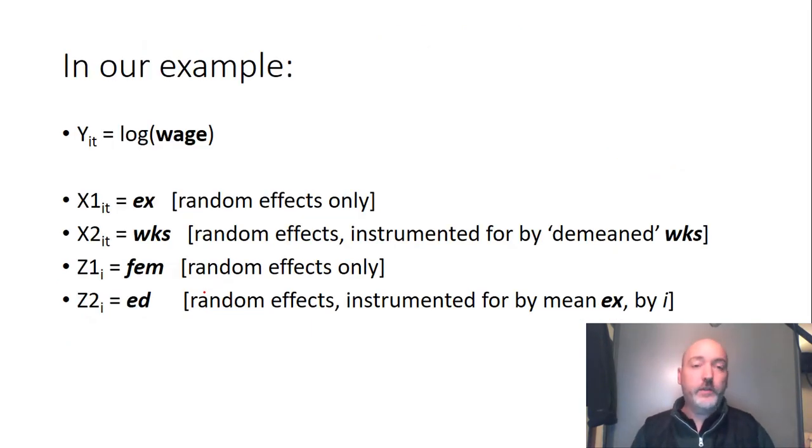So we might suspect, with our log wage as our dependent variable, the X variables are the work experience and weeks worked. Then we just have to think about which one is potentially correlated with the AI. We might assume that the level of experience is going to be uncorrelated with the time invariant error component. But we could definitely imagine a case where the number of weeks worked is going to be individual specific and have a correlation with that AI. So something about work ethics, something about some unobserved effect is going to make an individual more likely to have a higher wage and more likely to work more hours, more weeks over time. So that could be a potential X2 variable.